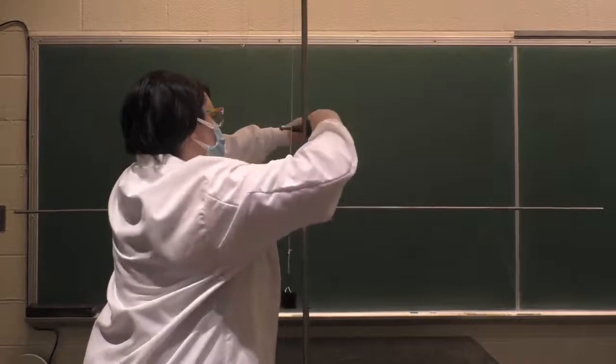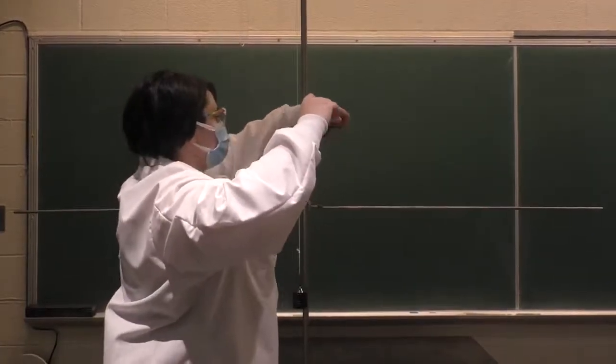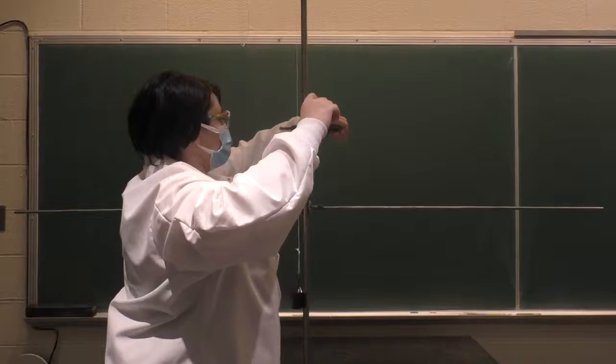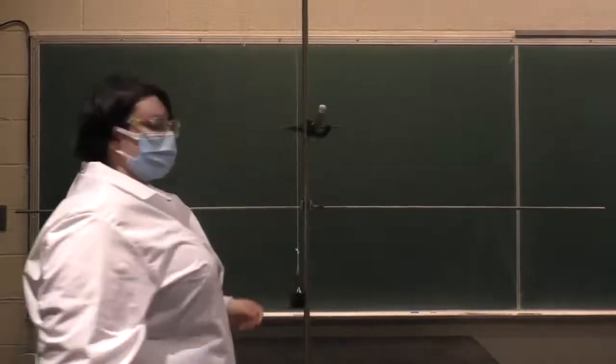Now what we are going to do is modify this and put in a barrier. So this interrupts the swing of the pendulum, and the question is how high will it go now?